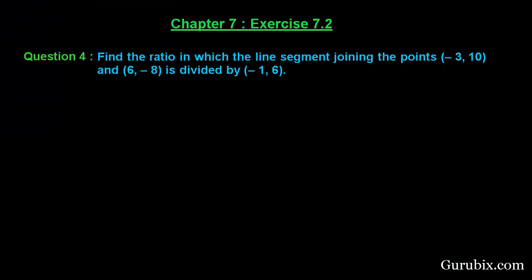Welcome friends, let us solve question number 4 of exercise 7.2 of chapter 7. The question says find the ratio in which the line segment joining the points (-3, 10) and (6, -8) is divided by (-1, 6). Let us solve the question. First of all, let us draw a rough sketch.